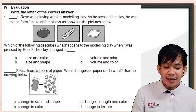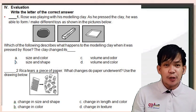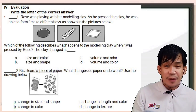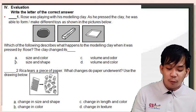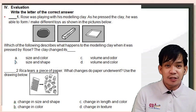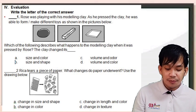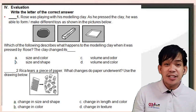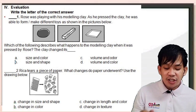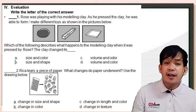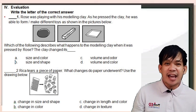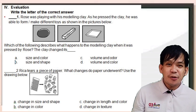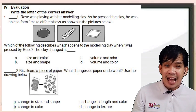Number two, Rika tears a piece of paper — pinunit-punit daw ni Rika yung paper. What changes did the paper undergo? There is a drawing below — just refer to your learning activity sheet. Ano yung changes na nangyayari sa paper? A, change in size and shape; B, change in color; C, change in length and color; or D, change in texture. Write your answer on the line provided.